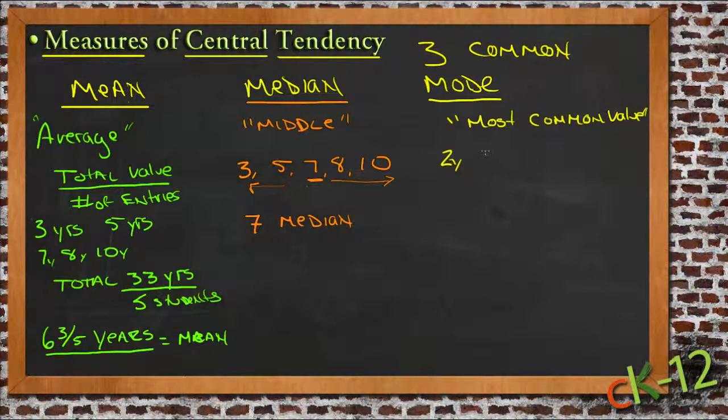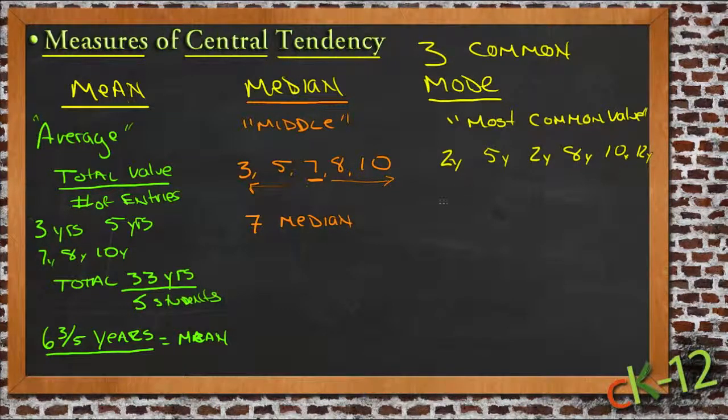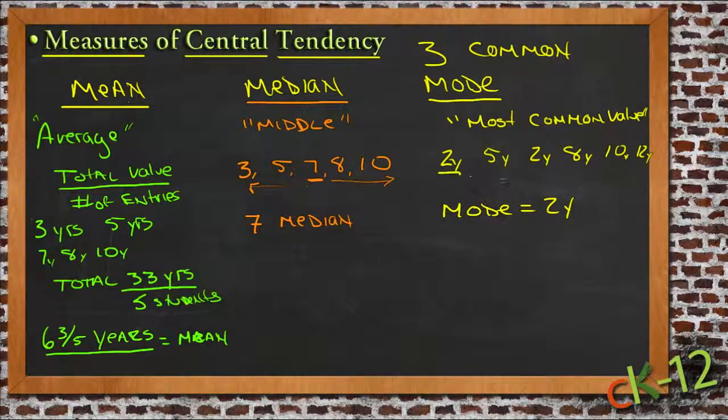So if we're looking for the mode of a group of ages, let's say we had a 2-year-old, 5-year-old, another 2-year-old, an 8-year-old, a 10-year-old, and a 12-year-old. The mode here would be 2 years because it's the only one that has two entries. This is an interesting set to look at because the mode would be very different from either the median or the mean.